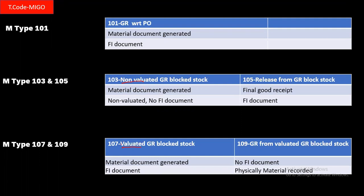In the 107/109 case, accounting entry is generated at 107 even though the material has not been physically received. At 103, the stock is non-valuated stock and is not yet company stock. In the gate entry case, after unloading of material we release to warehouse stock. In the QM case, after inspection of material we can release to warehouse stock. At 103, the system will not ask for a storage location.